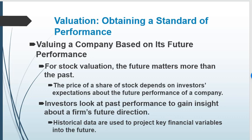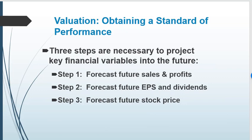Although the past can give us some information, all of the investment literature about a stock or a mutual fund will say that the past does not guarantee the future. But we will look at the past to try to figure out some trends or directions a company may be working towards. There are three steps in this initial model: we need to forecast future sales and profits, forecast earnings per share and dividends, and then forecast future stock price.